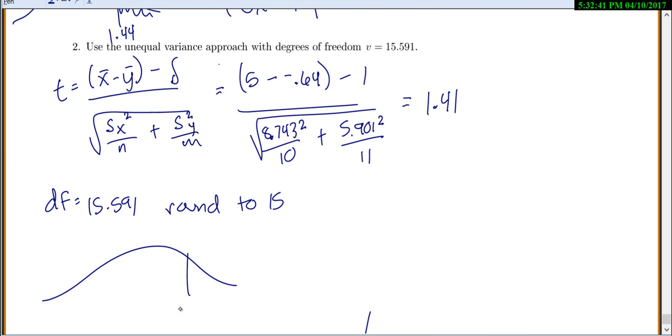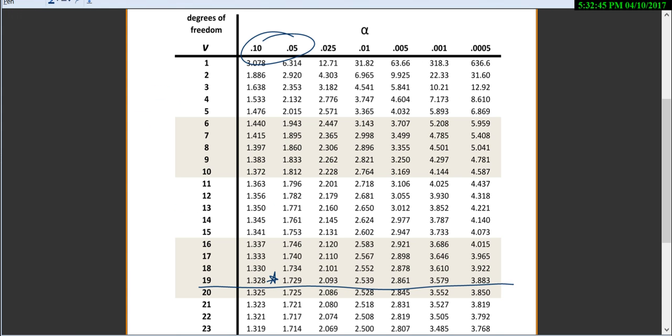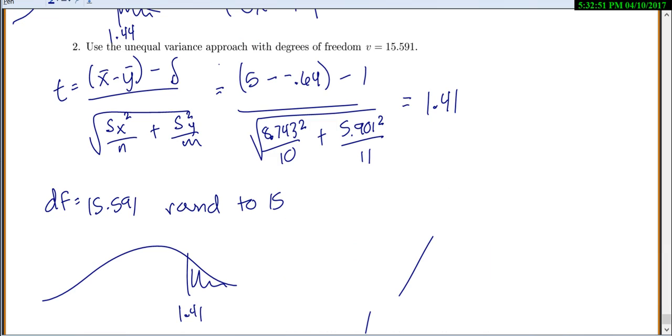Here's my T is 1.41. We want the area to the right. So now 15 degrees of freedom, 1.41 puts us in the same spot. So my p-value is between 0.05 and 0.1. The exact value is 0.0891.